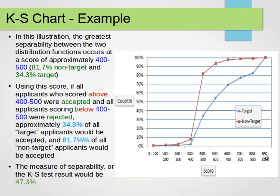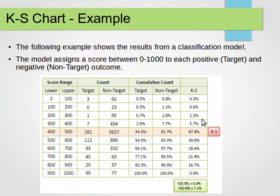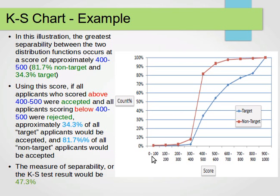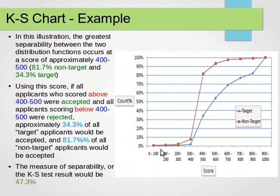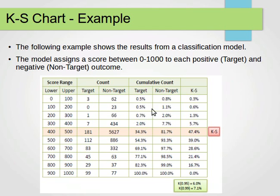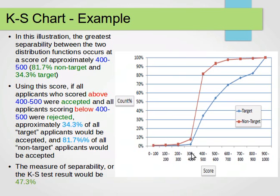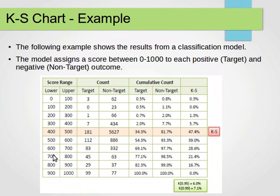In the plot, the blue line is the target and the red is the non-target. In the score range 0–100, we have 0.5% for the target and 0.8% for the non-target — very close. Between 100–200 we have 0.5% and 1.1%. As we move through the intervals, the difference grows: at 300–400, the target is 2% and the non-target is 7.7%. We continue covering all intervals to build the full cumulative picture.